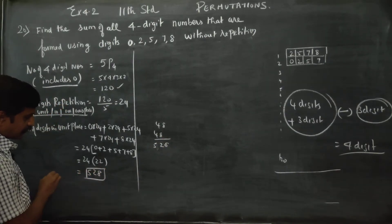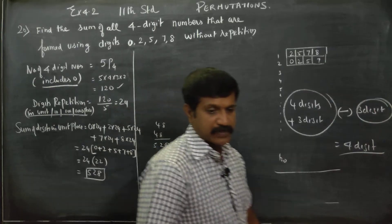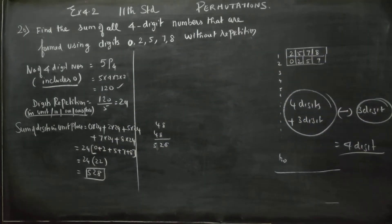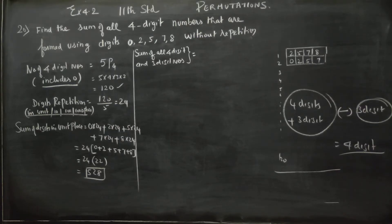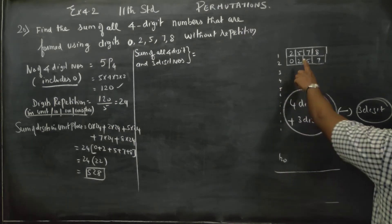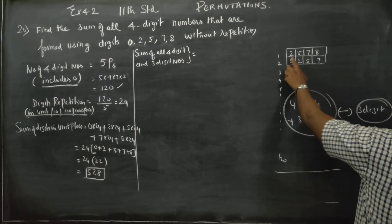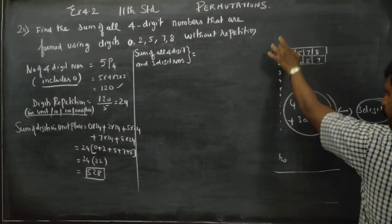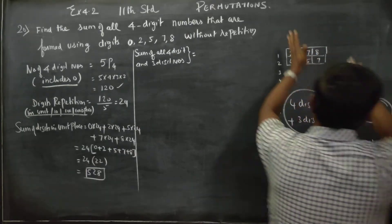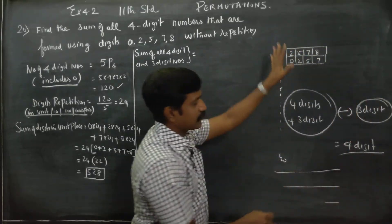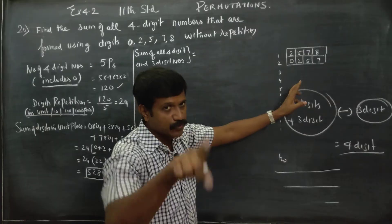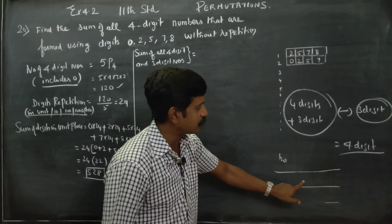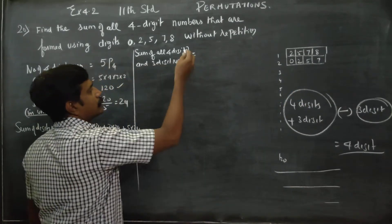Your answer will be 528. This is the value of unit place total. Next, we are moving to the sum of all the 4-digit and 3-digit numbers. It includes 4-digit as well as 3-digit numbers. This is all added together, giving 103 numbers total.